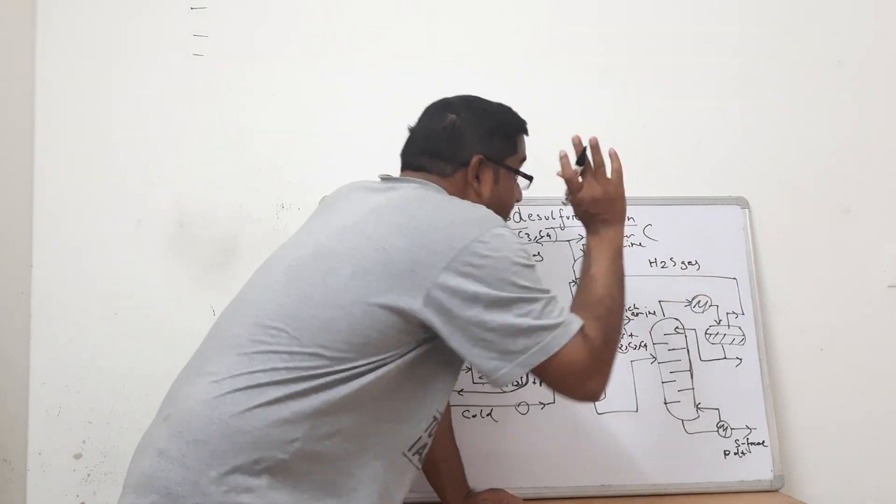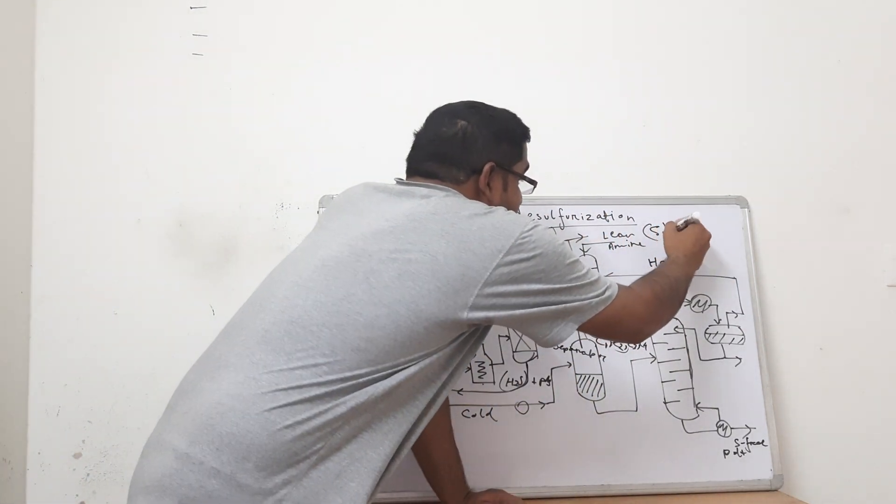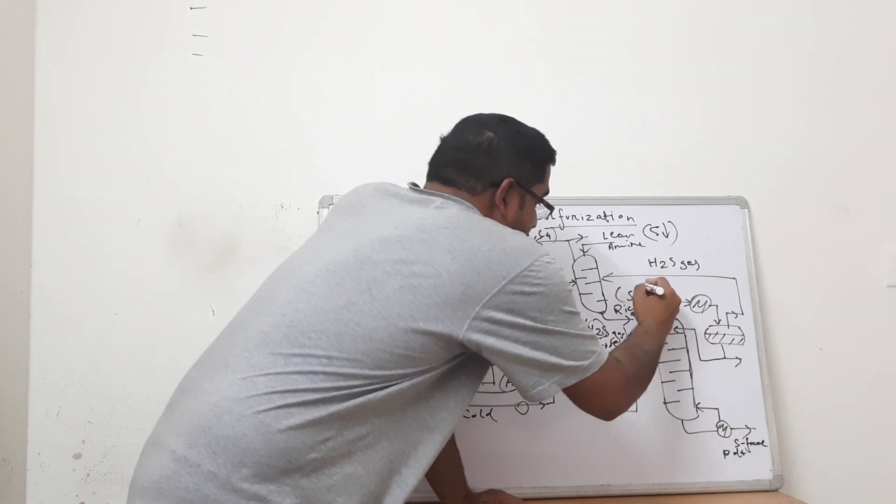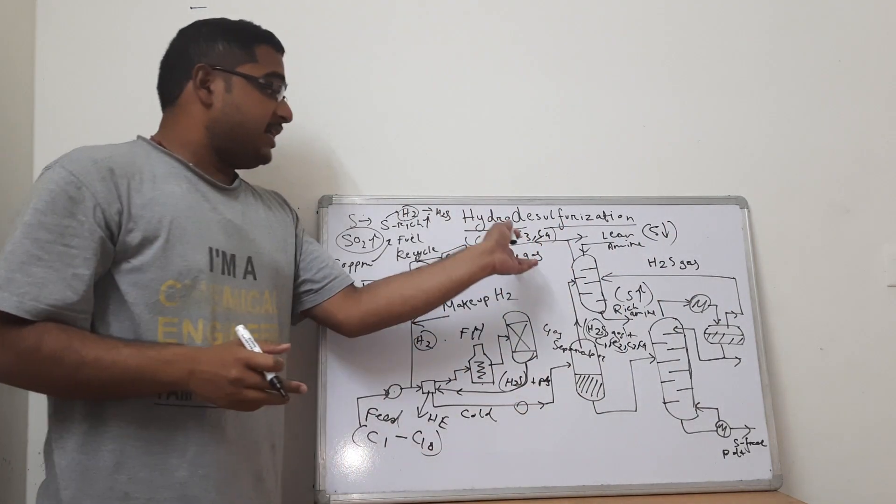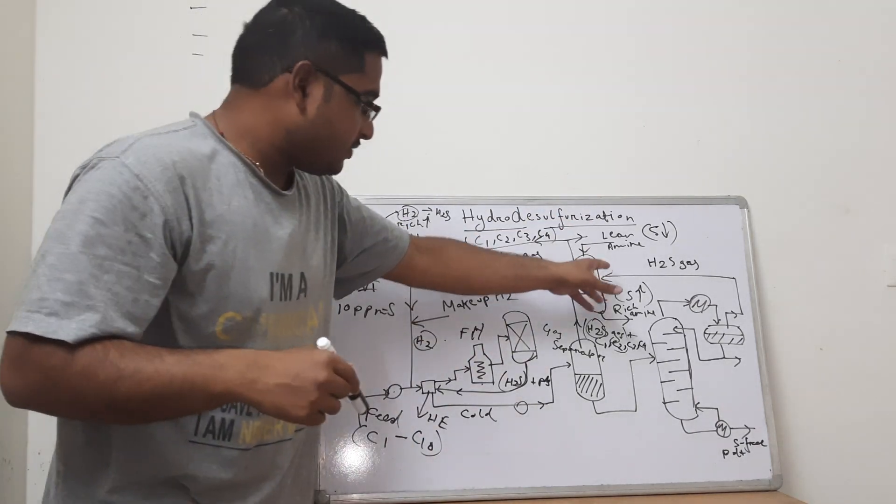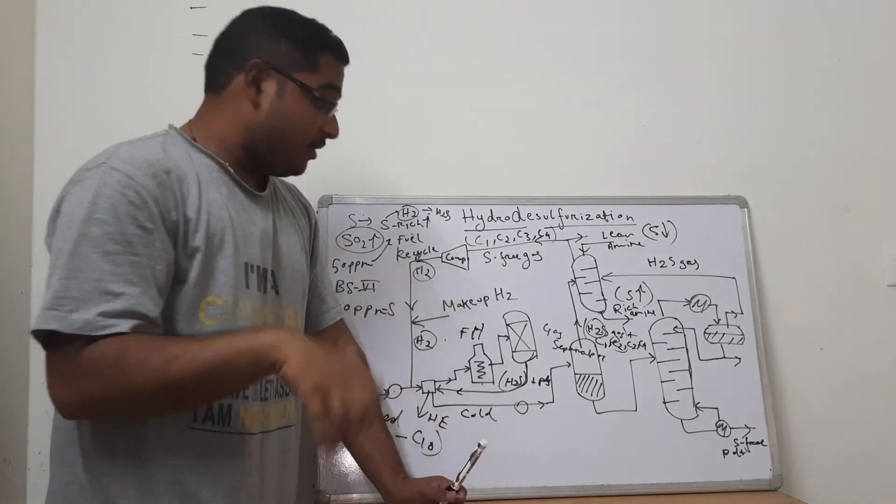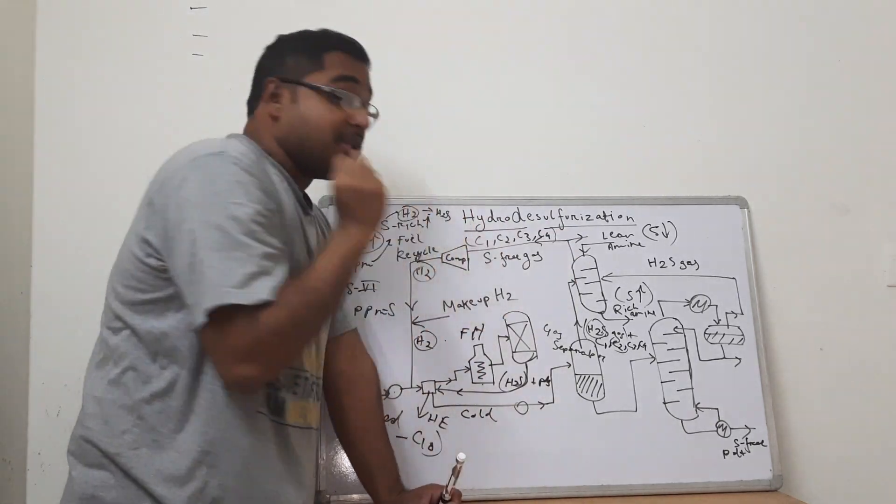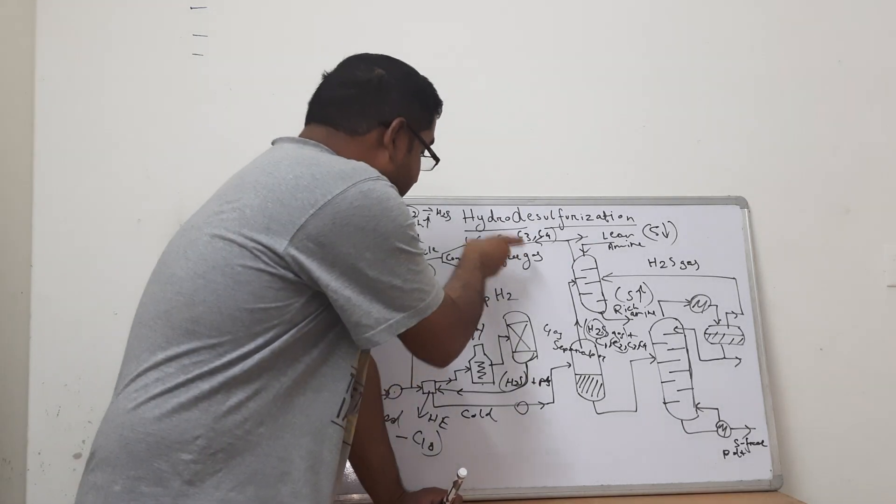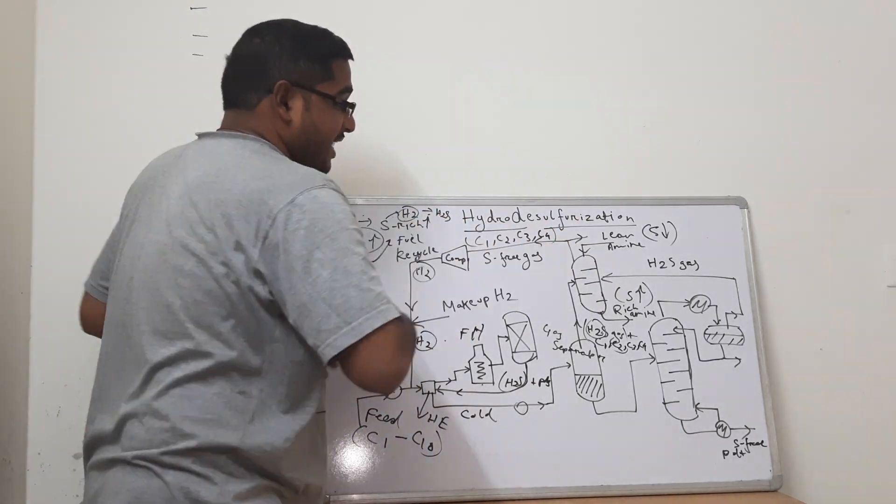Lean amine means lean means less or thin. So sulfur is less. And as it escapes, sulfur is high. And no sulfur is present in this gas stream that is escaping from the amine absorption tower. So this is basically my amine absorption tower. So you see that amine is primarily absorbing the sulfur. And C1, C2, C3, C4, the gaseous state carbon and the recycled hydrogen is being refilled.